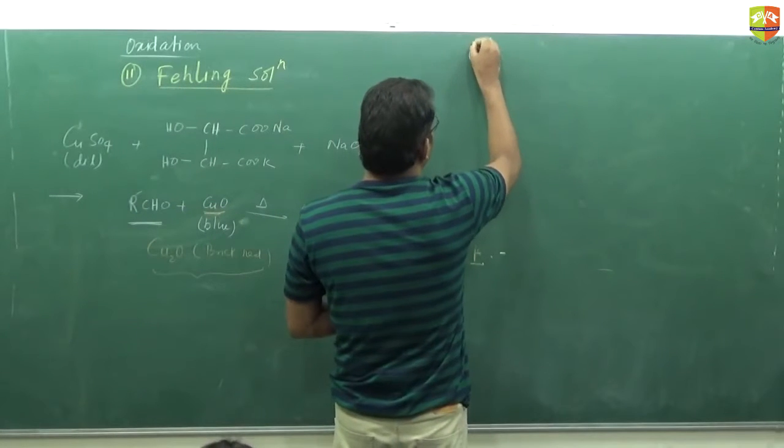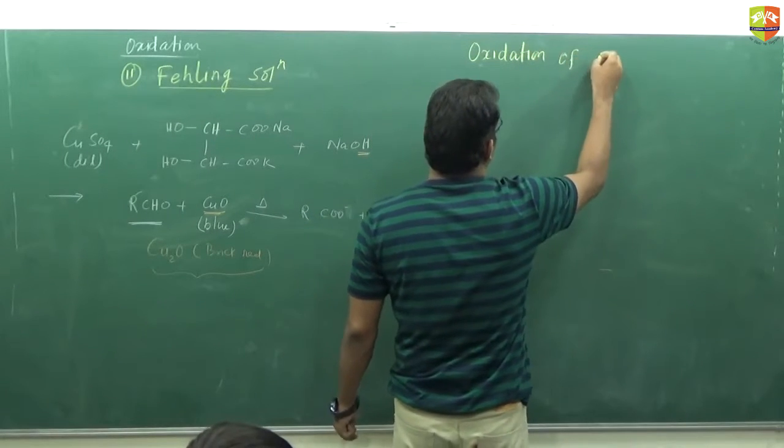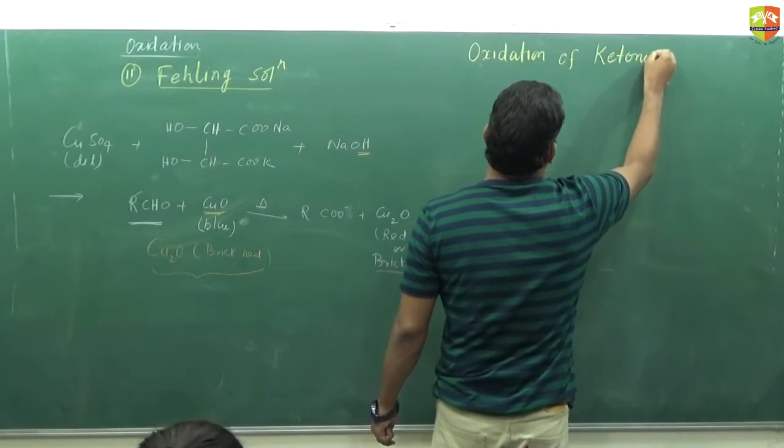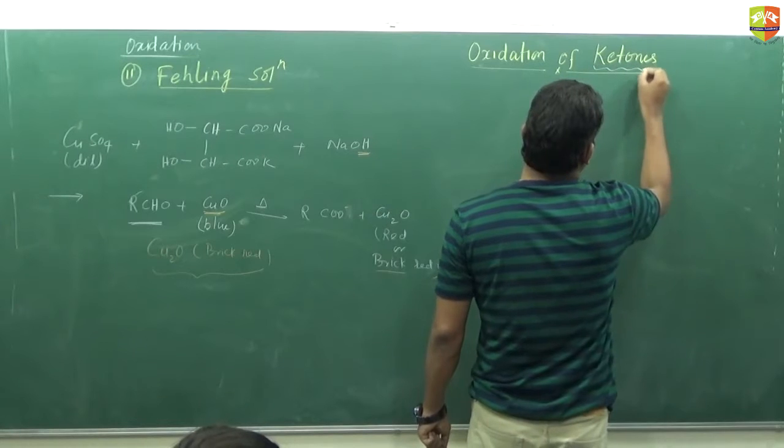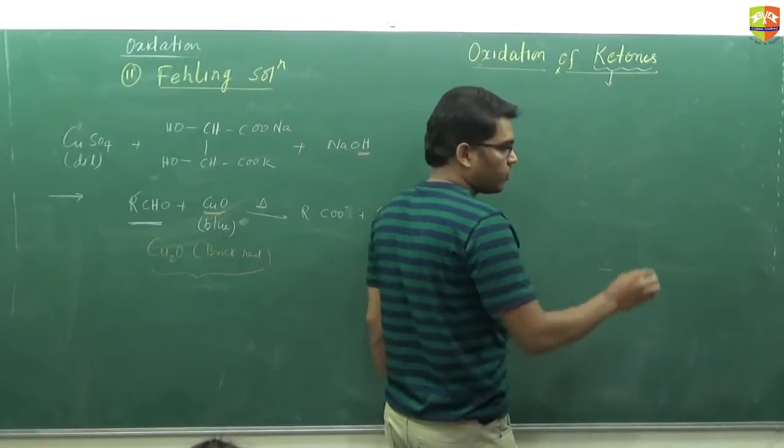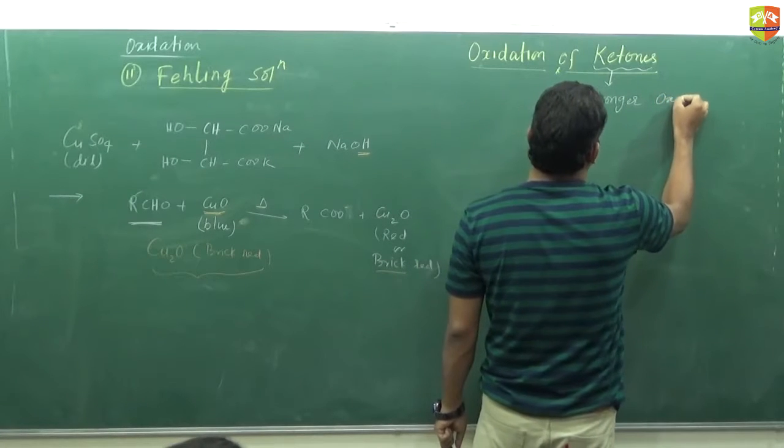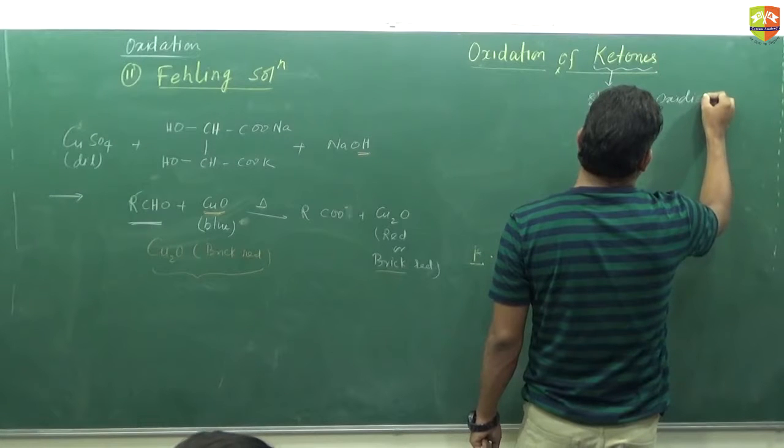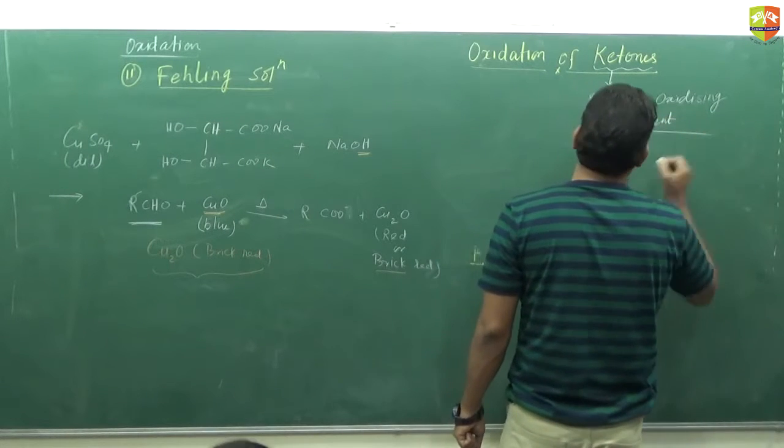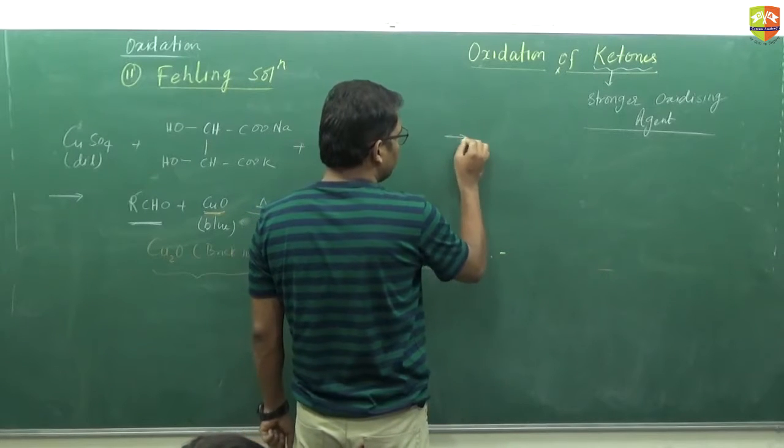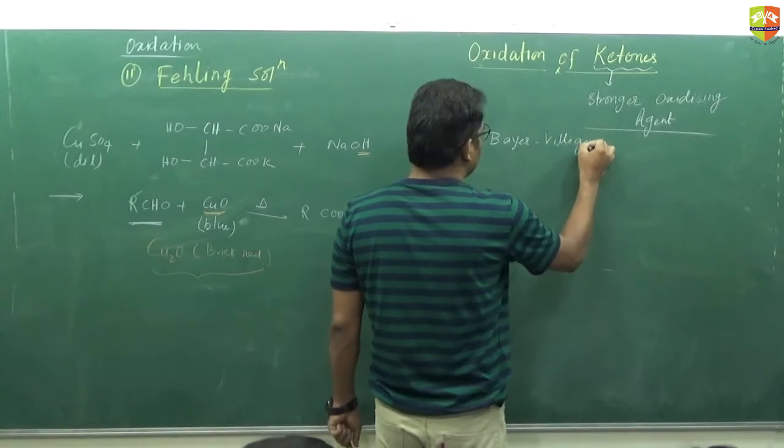Next we have oxidation of ketones. For ketones we require comparatively stronger oxidizing agents because there is no hydrogen attached to the carbonyl carbon. To oxidize ketones we need stronger oxidizing agent. The reaction here that we use for oxidation of ketones we call Baeyer-Villiger oxidation reaction.